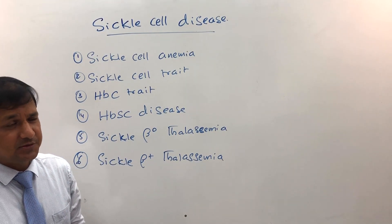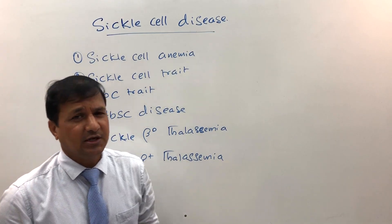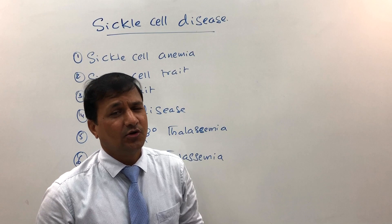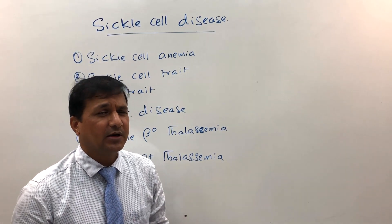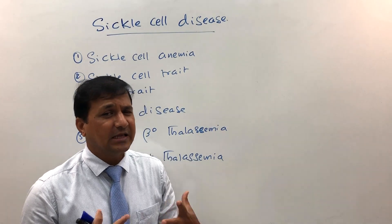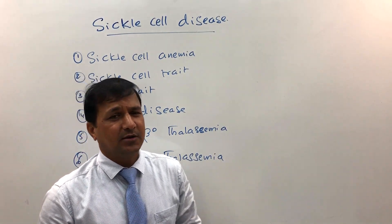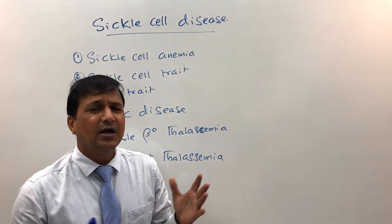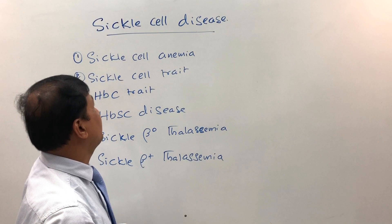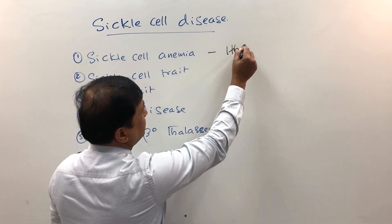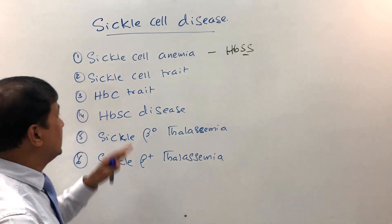Sickle cell anemia is a homozygous condition where the beta globin in the hemoglobin molecule — specifically the sixth amino acid, glutamate — is replaced by the hydrophobic amino acid valine. Because of this, more hydrophobic forces occur, and when hemoglobin enters the deoxy state (T state), the hemoglobin molecules polymerize, forming a sickle-shaped red blood cell. This sickling leads to vaso-occlusion, splenomegaly, micro-infarction, and a variety of clinical signs. It is written as HbSS — both beta globin genes are of sickle type — making it an autosomal recessive, homozygous condition.